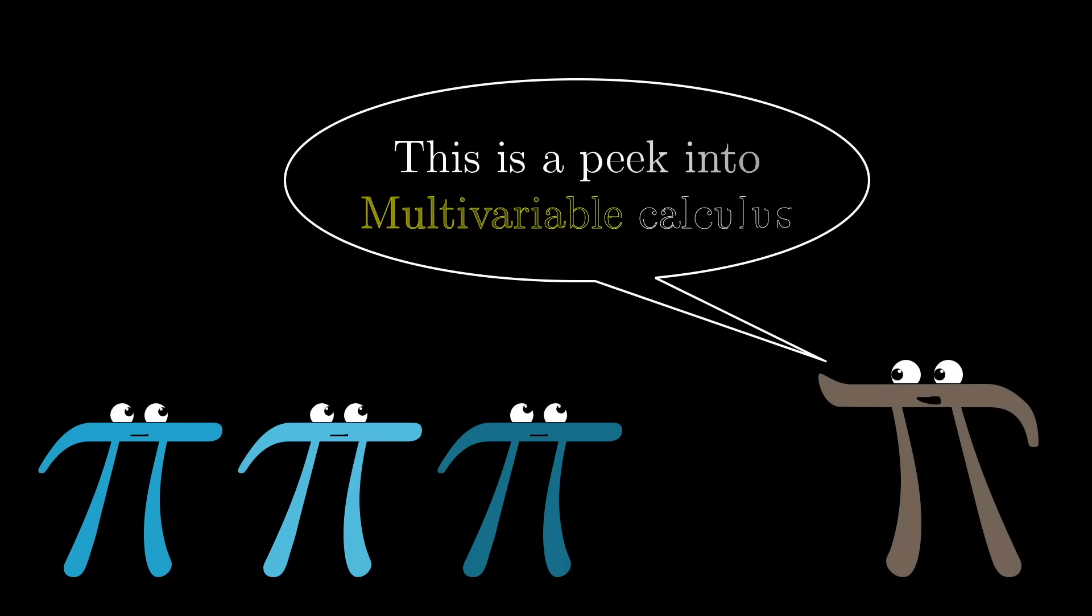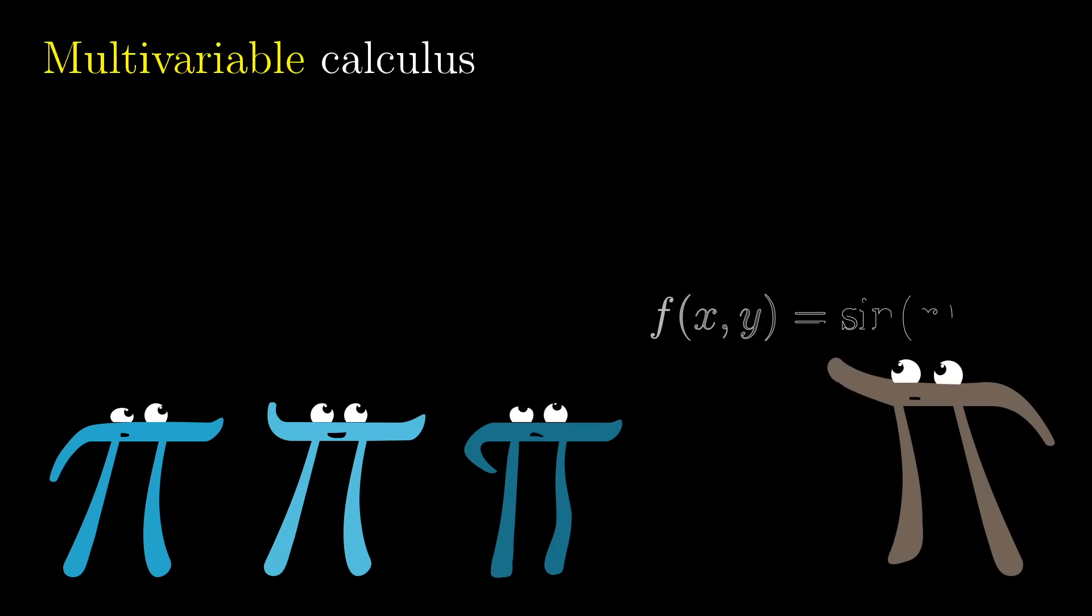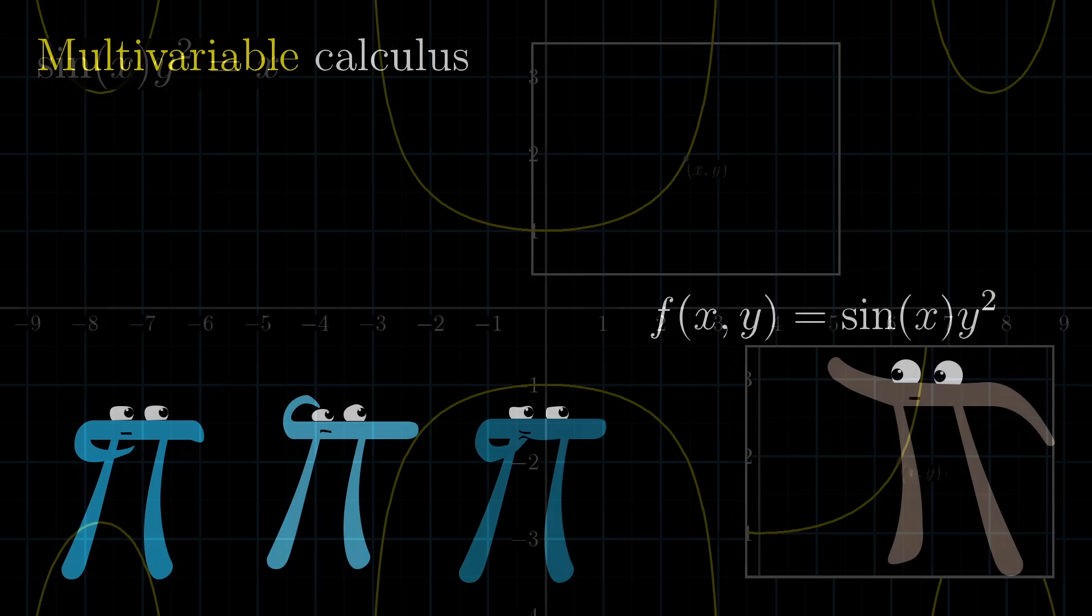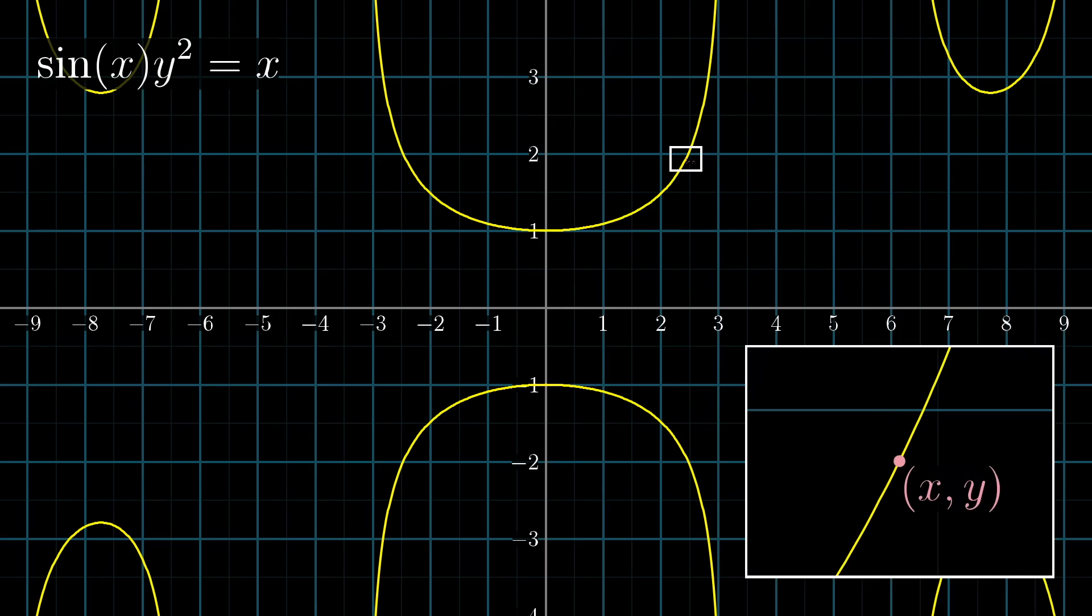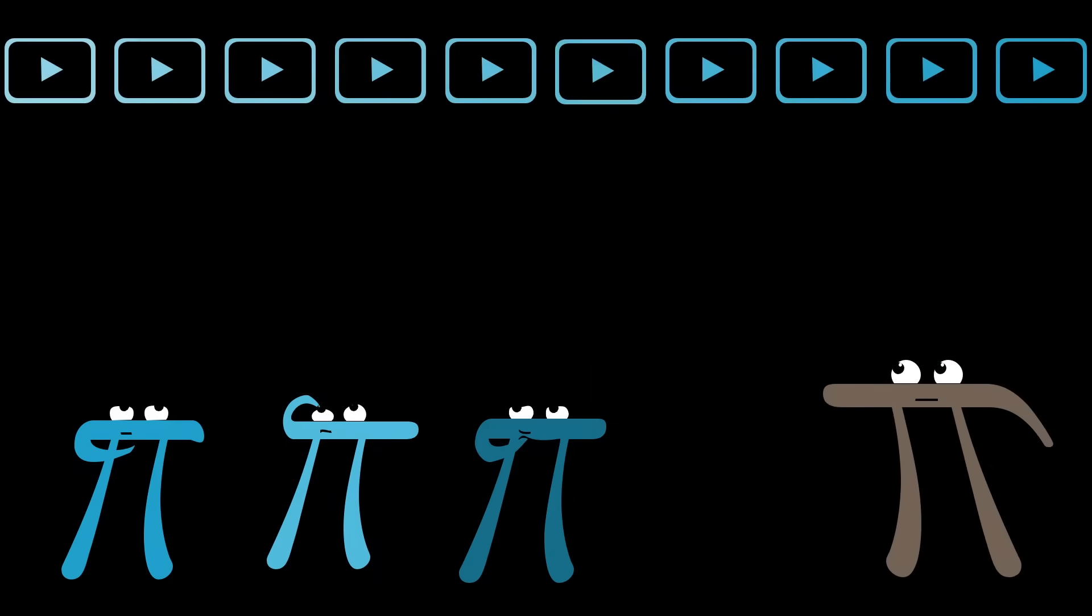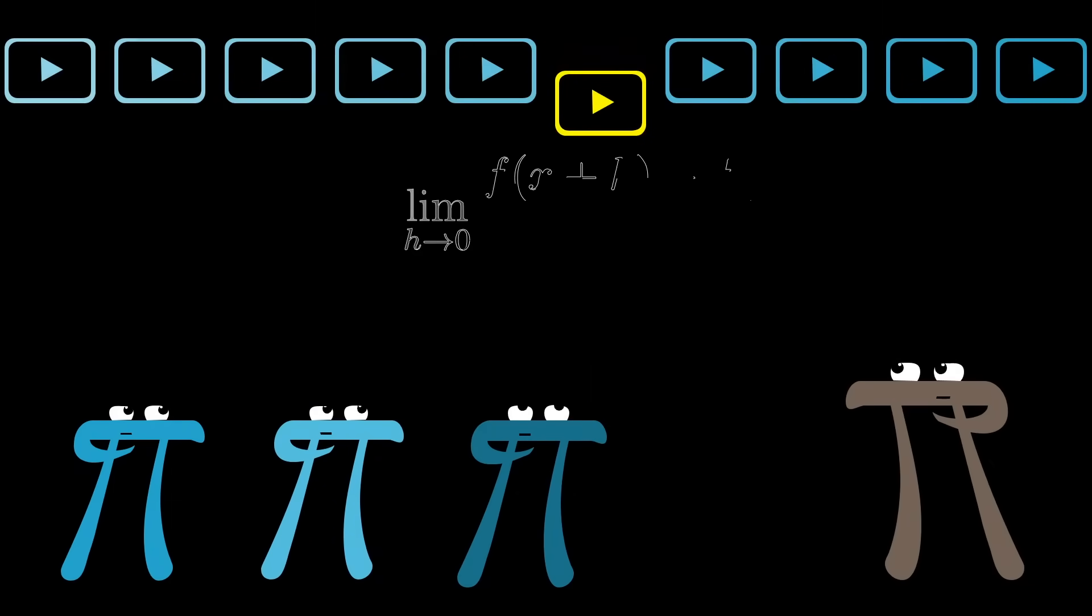By the way, all of this is a little sneak peek into multivariable calculus, where you consider functions that have multiple inputs and how they change as you tweak those multiple inputs. The key, as always, is to have a clear image in your head of what tiny nudges are at play, and how exactly they depend on each other. Next up, I'm going to be talking about limits, and how they're used to formalize the idea of a derivative.